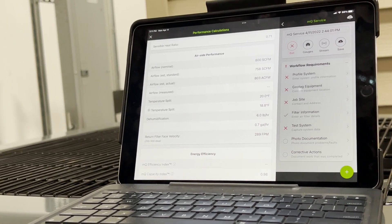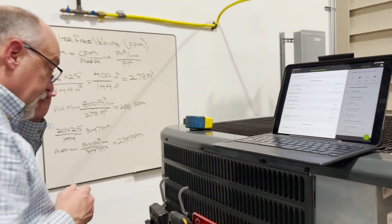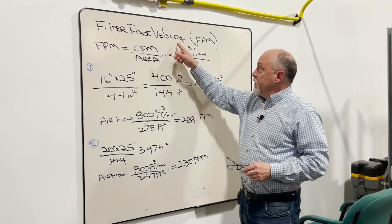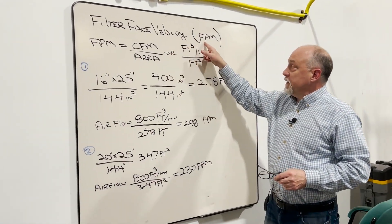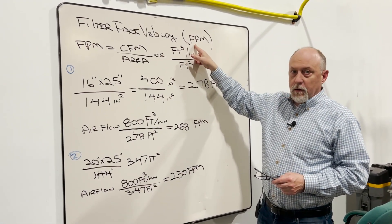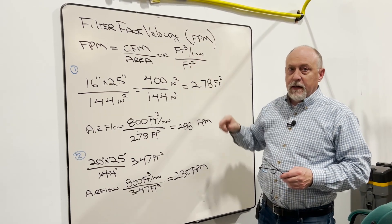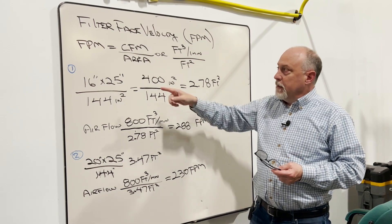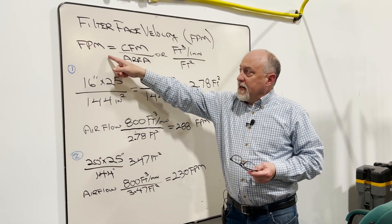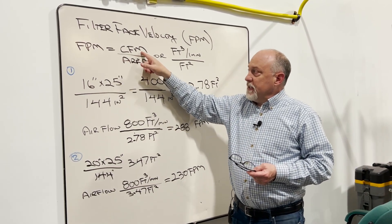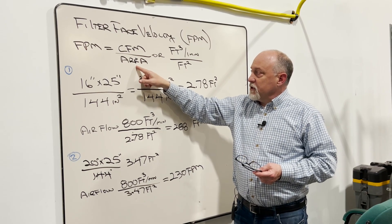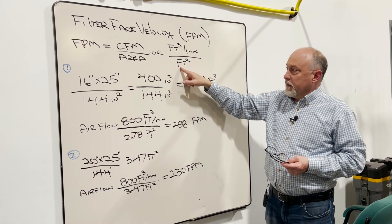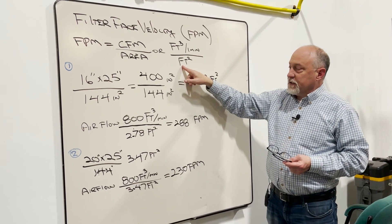Let's talk about how that's calculated. This is just a simple calculation. Filter face velocity is measured in feet per minute — that's just like miles per hour, it's the speed of the air going across the filter media. So if you want to calculate FPM, you take your CFM divided by your area in square feet. So you get feet cubed per minute divided by feet squared, which gives us feet per minute.